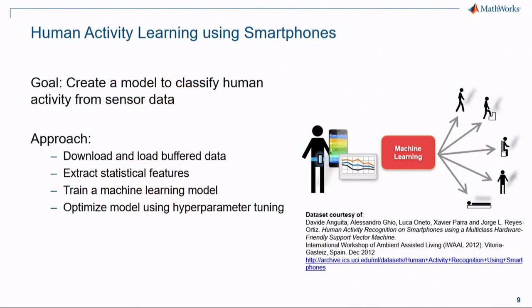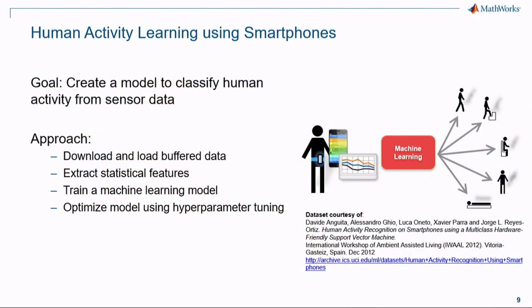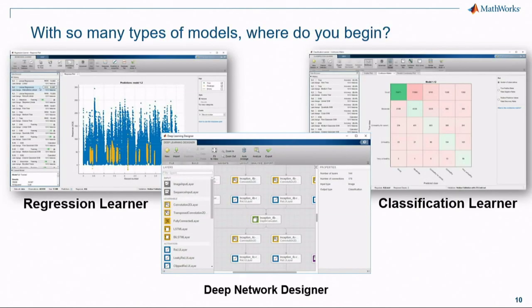If you have weird data that you have questions about, put it in the chat. The example I'll show is on the file exchange so you can get the data and follow along later. This is basically sensors from your smartphone — you're walking around or sitting, dancing, doing different things — and we're going to use that to train a model. It's interesting sensor data; you actually have to do something with the data before you can start training models. Our objective is to pass the sensor data into a model and train a classifier to come up with our labels.